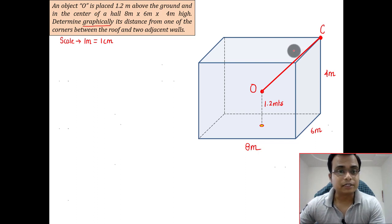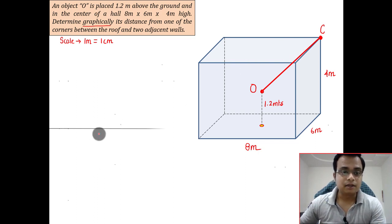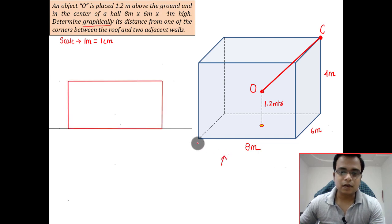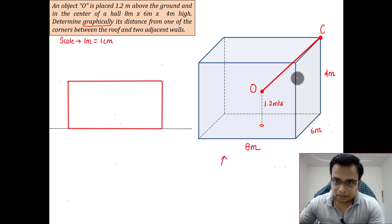Here we go. Let's draw an XY line, let's draw the front view of this hall. This is going to be 8, and this is the height, that is 4. 8 by 4, done.